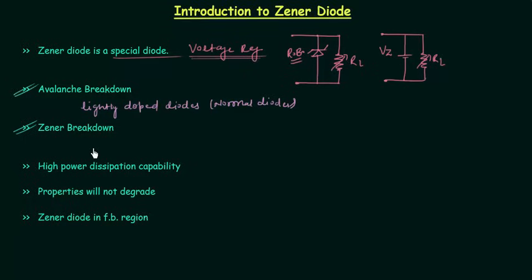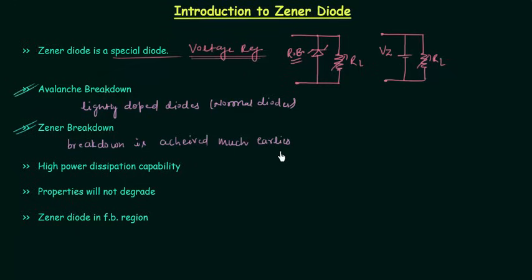In case of Zener breakdown, we can achieve the breakdown much earlier. Breakdown is achieved much earlier in case of Zener diode because we increase the doping level on both sides — the N side and P side — and we have the breakdown earlier as compared to normal diodes. In case of Zener breakdown, breakdown is initiated by direct rupture of covalent bonds — that is, tearing of covalent bonds — and this happens due to the strong electric field at the junction developed by the high reverse bias potential.